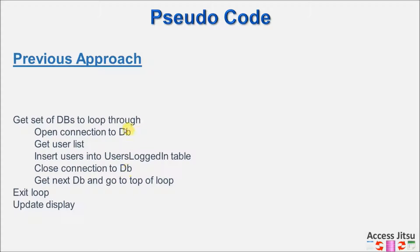Notice in this approach we used the same connection object for each database. We would open a connection object to the database, use it, then close that connection, then get the path to another database and use the same connection object to open that database.